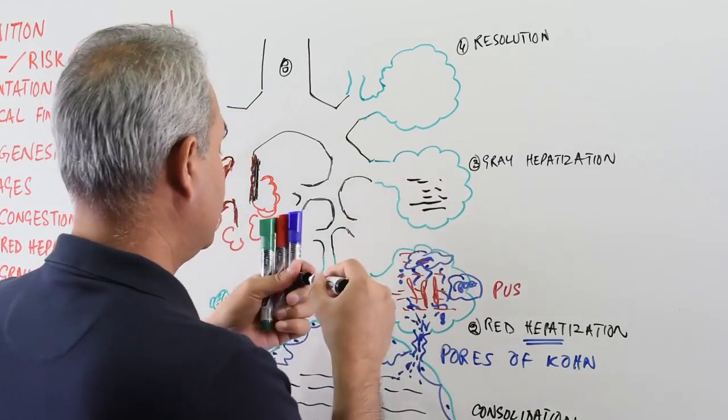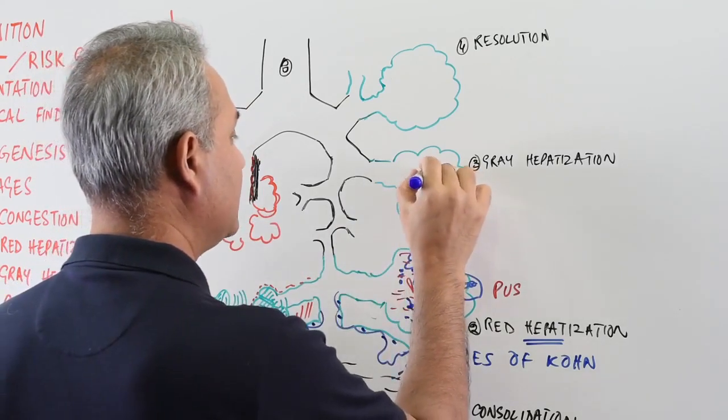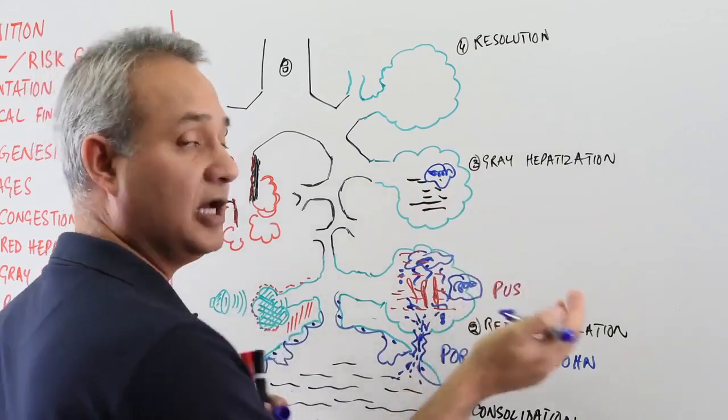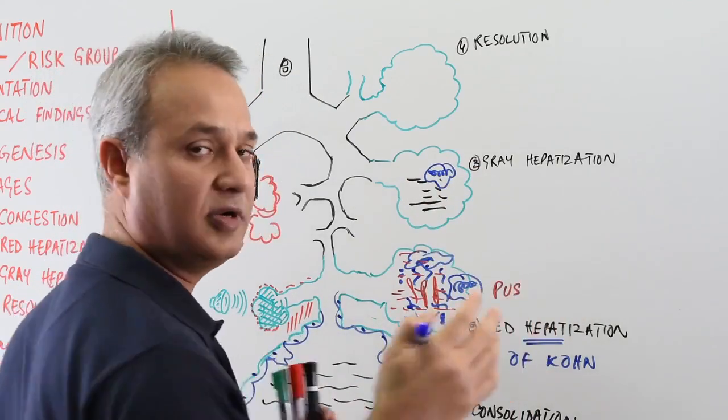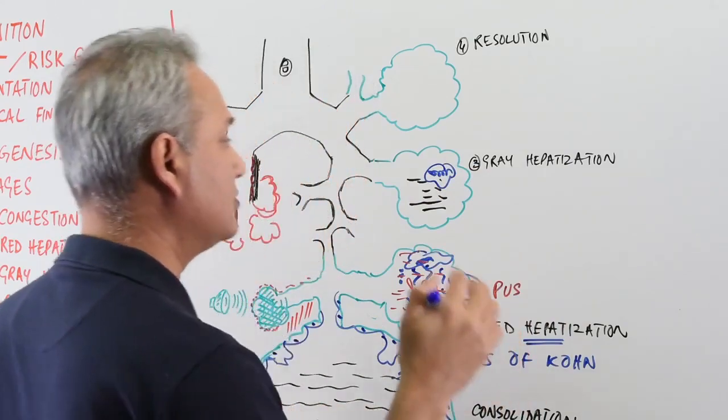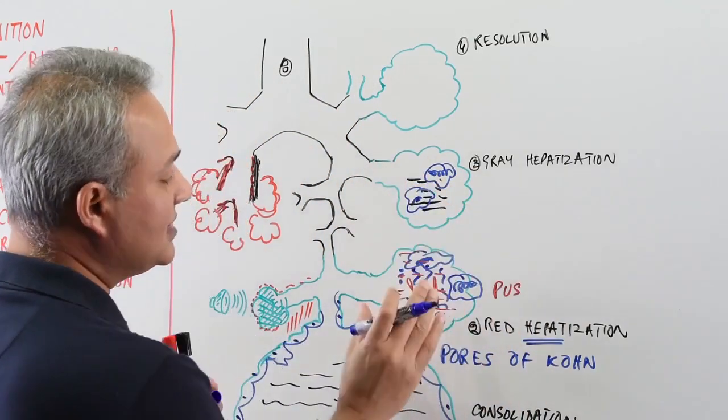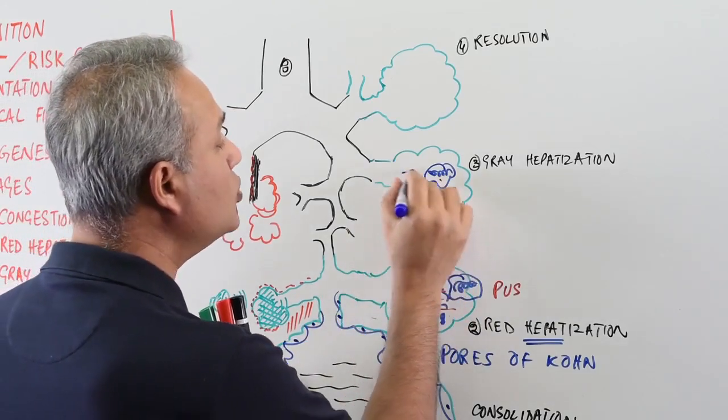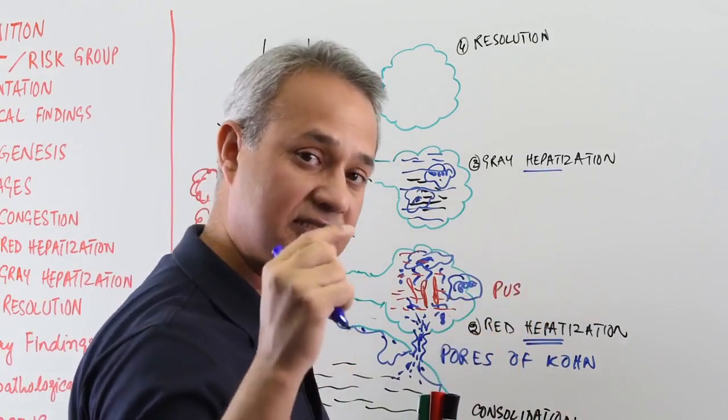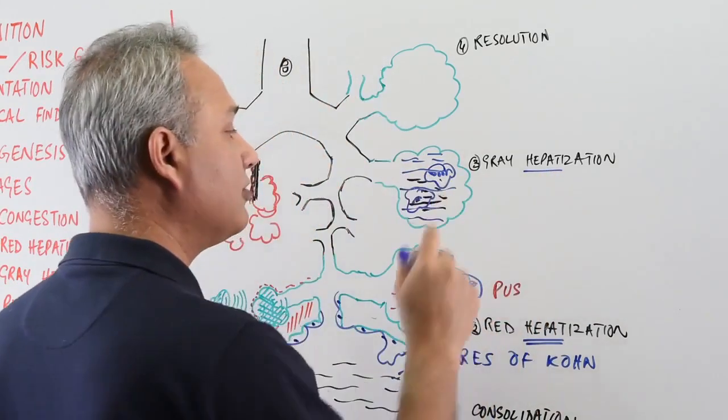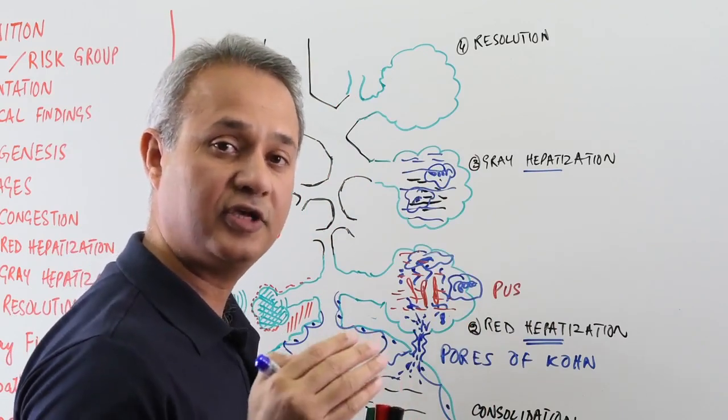So we have lots of fibrin. We have broken up and dissolved RBCs. We have neutrophils still present here. We may actually now start getting some mononuclear cells as well, but less in number. Plasma and T cells, macrophages are still present as well. So when this consolidated part loses RBCs, it is still hepatized. That means the consistency is still liver-like. However, the color becomes gray primarily because of the dissolution of the RBCs.